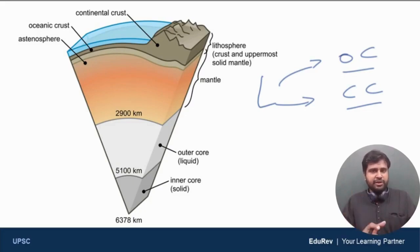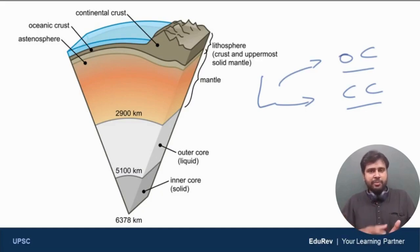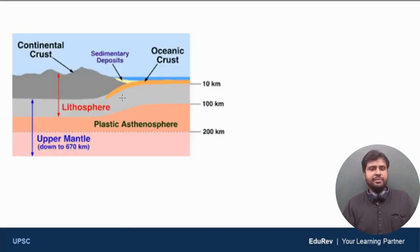Just keep one thing in mind: lithosphere is broken down into tectonic plates. Tectonic plates are of two types — major tectonic plates which are larger, and minor tectonic plates which are smaller. The tectonic plates are in constant motion on top of asthenosphere which is molten or semi-solid.